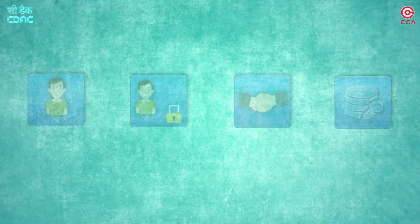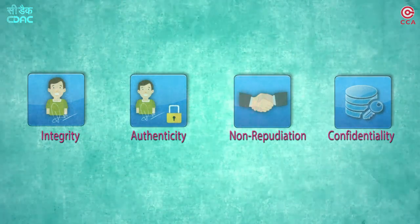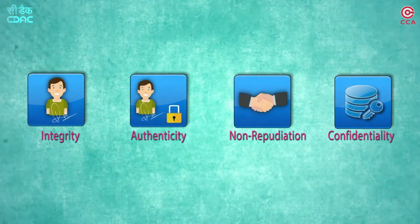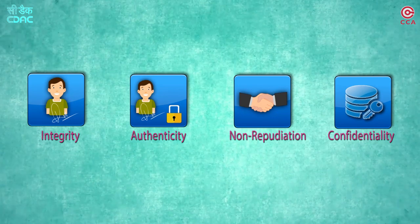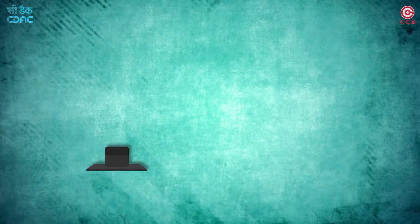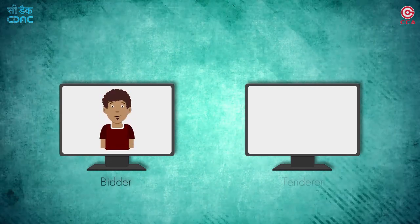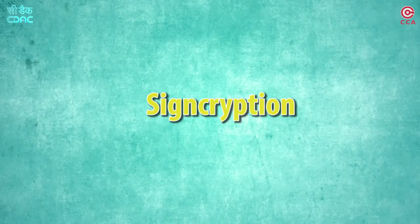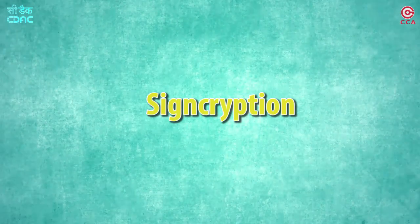There will be several instances where you need all the elements of trust to be in place — namely confidentiality, authenticity, integrity and non-repudiation in a transaction. An example could be an e-procurement application, wherein the secrecy of bid is required along with the authenticity and integrity of the bid. This is achieved through a process called sign-cryption.